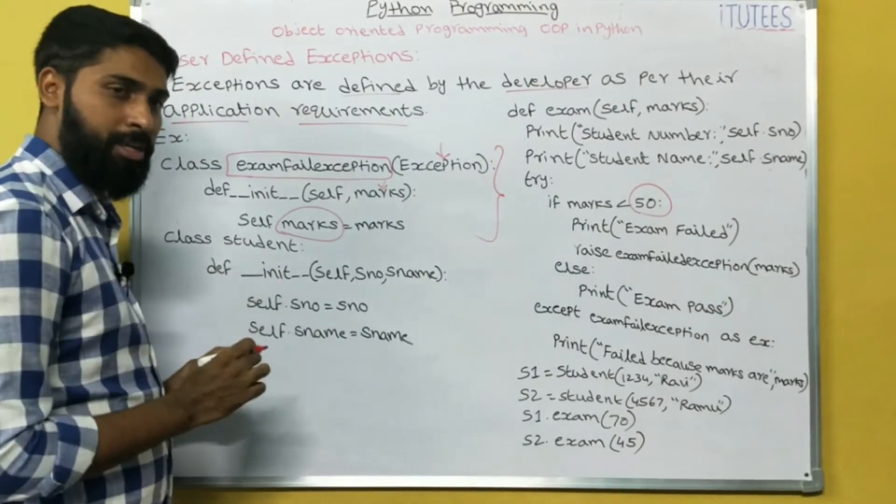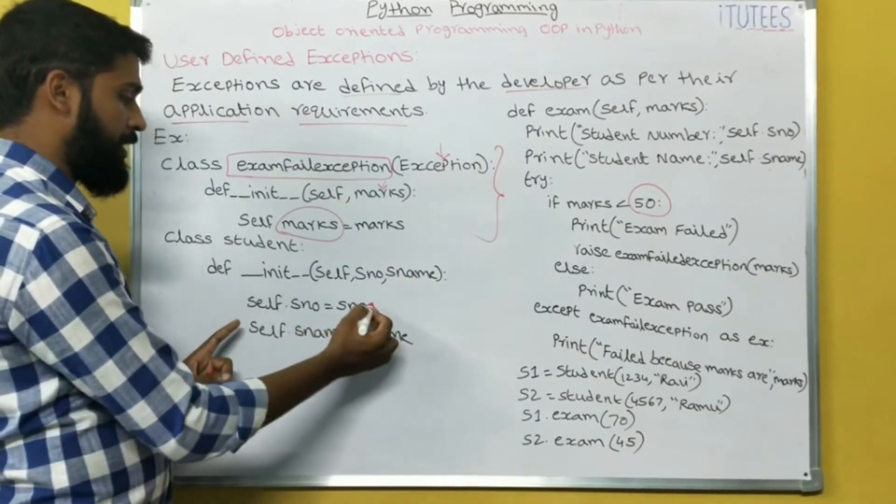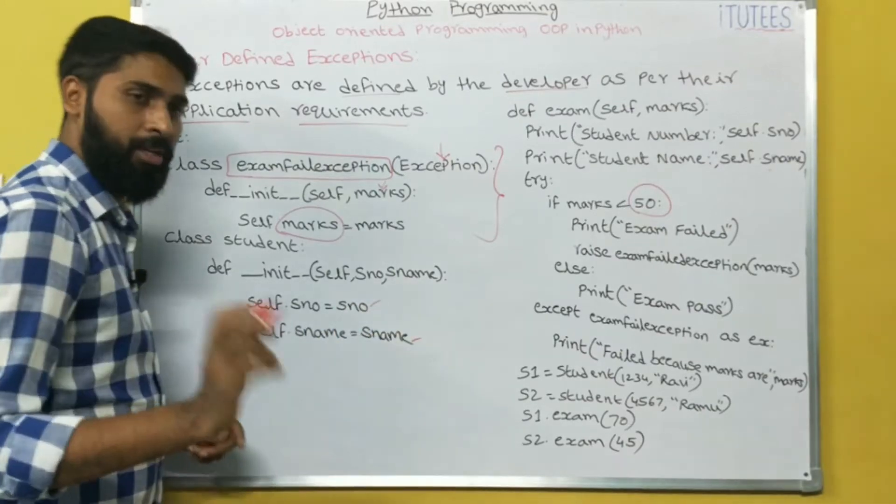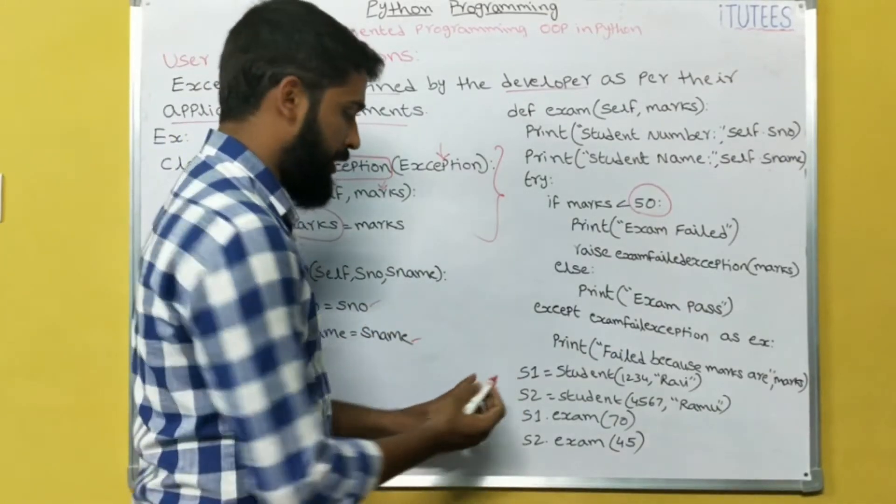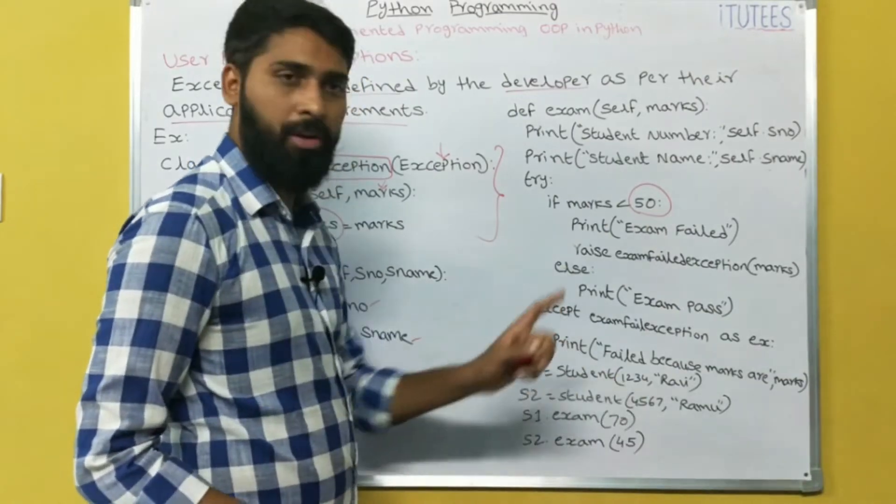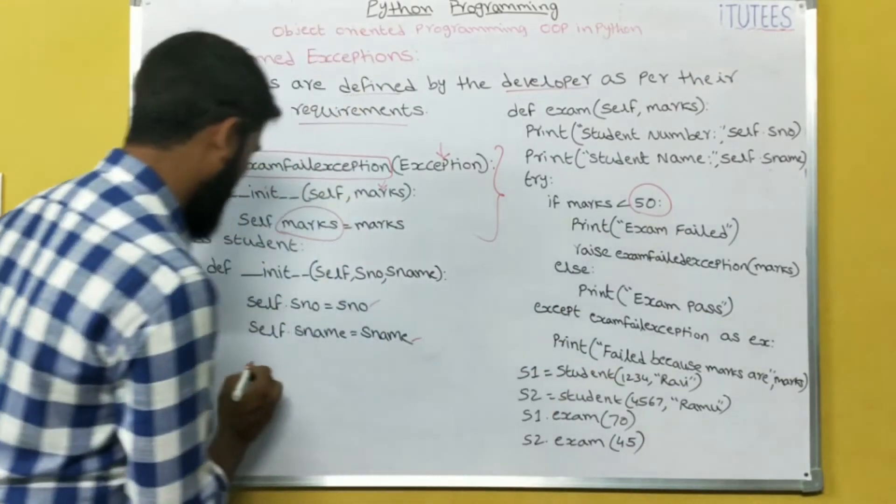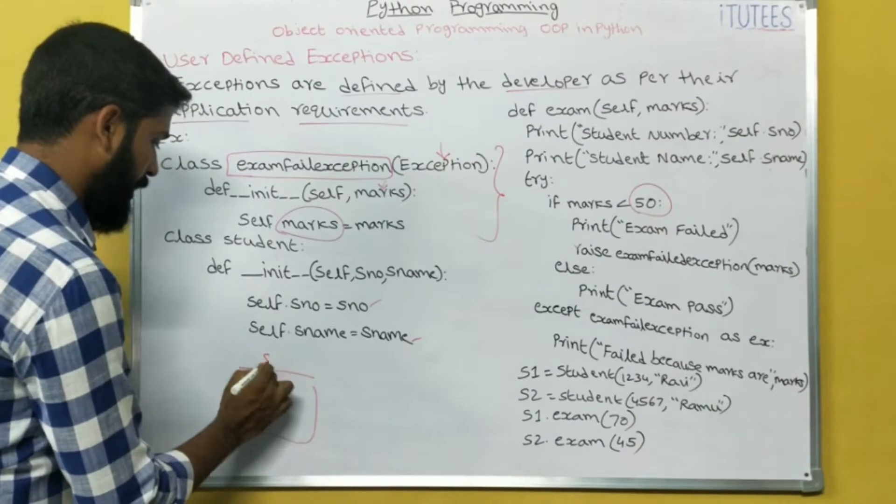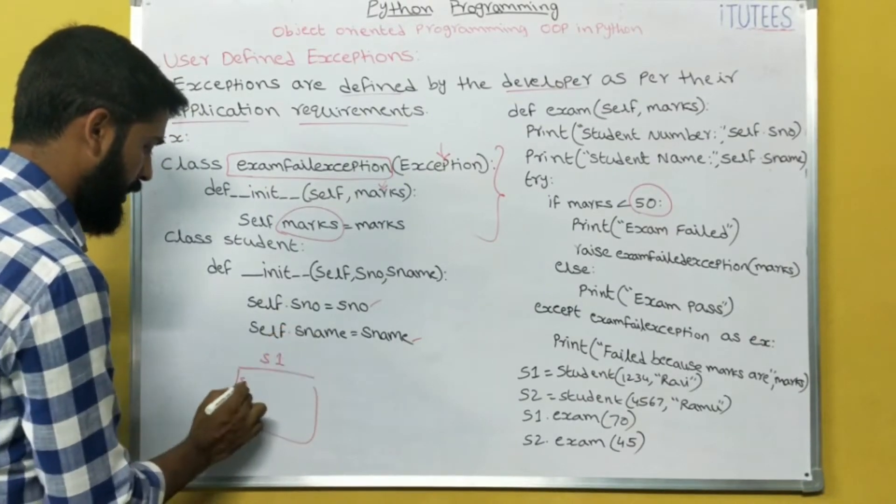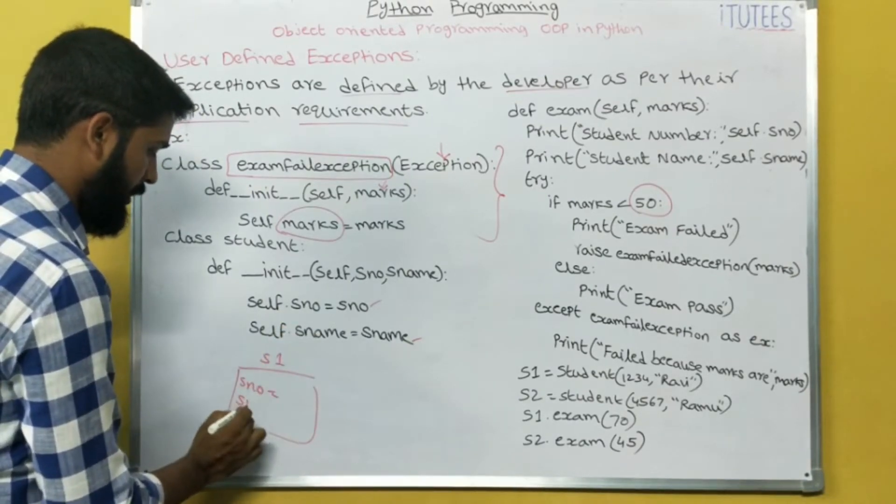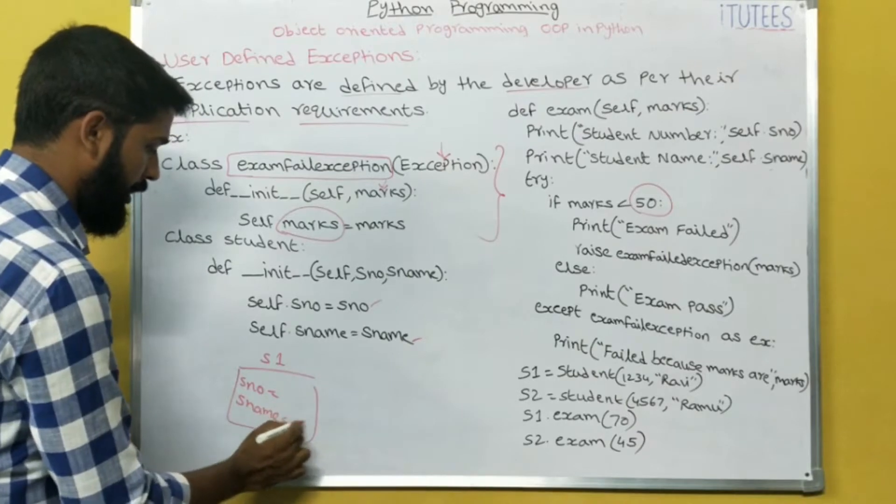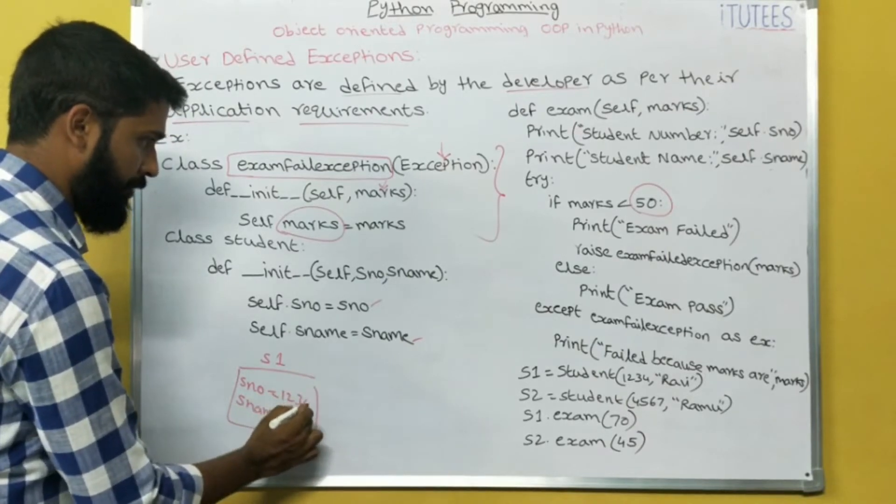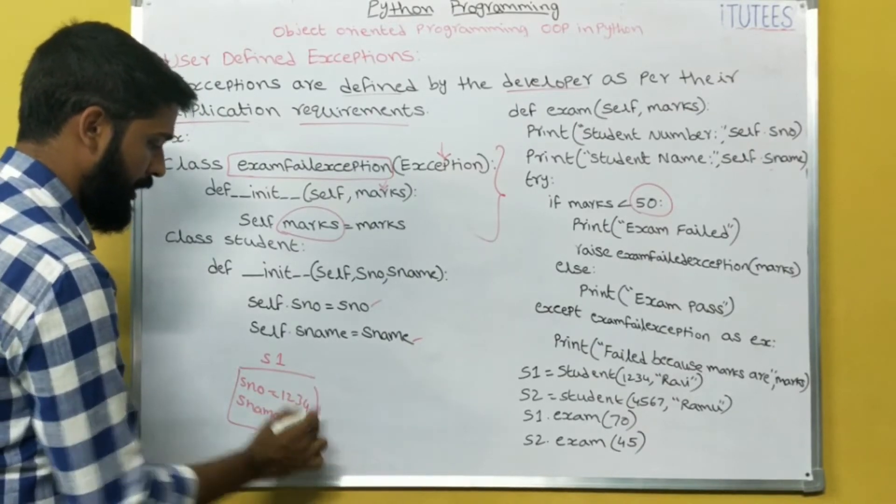Class student. I am going to initiate for number and name. The execution is starting from here. S1 equals to student 1234, Ravi. That means the object is created. S1, what is the instance variable? s_number, s_name. s_number equals to 1234, name equals to Ravi.